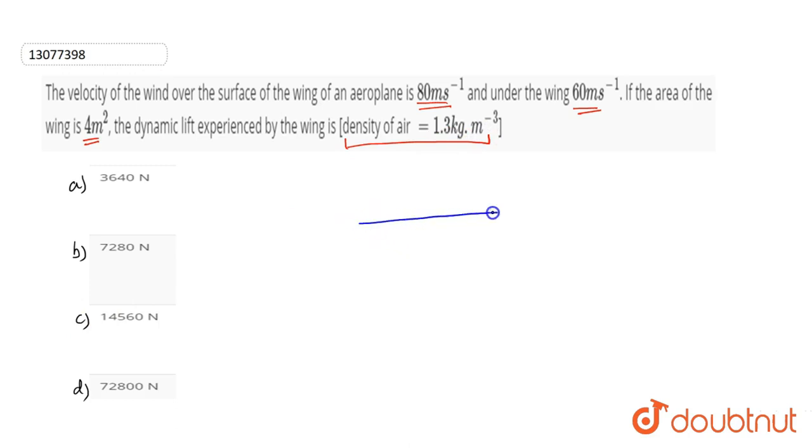Now, if we look at this plane's wing, the upper velocity is V, and here, V downwards.